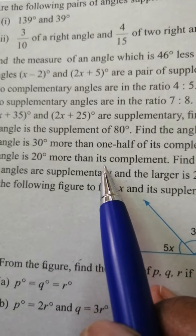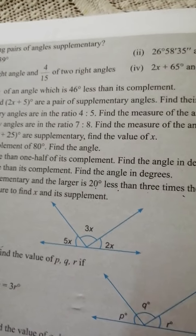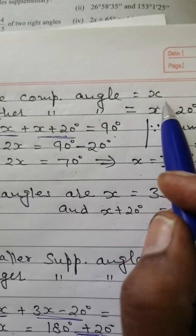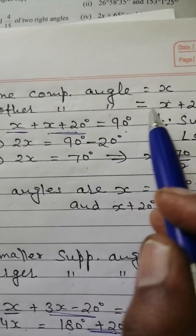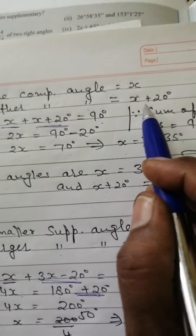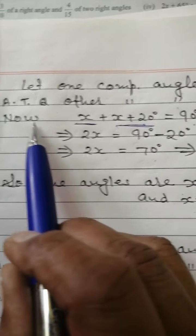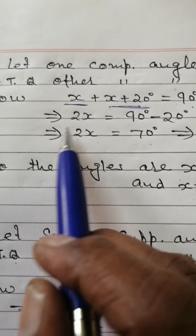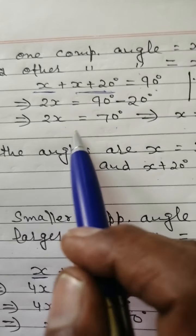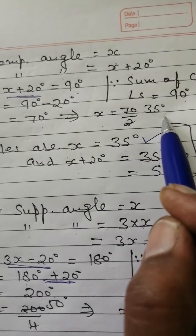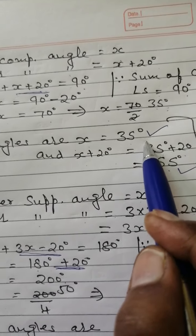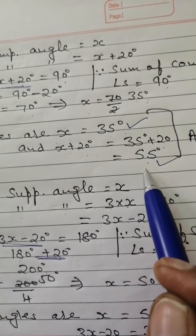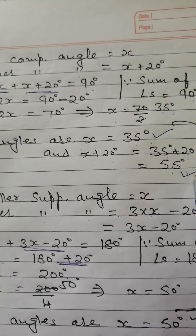Question number 17: An angle is 20 degrees more than its complement. Find the angle in degrees. Let one complementary angle equal x. According to the question, the other complementary angle equals x plus 20 degrees. Adding: x plus x plus 20 equals 90 degrees, because the sum of complementary angles is 90 degrees. 2x equals 70 degrees, so x equals 35 degrees. The angles are 35 degrees and 35 plus 20 equals 55 degrees. These two are complementary angles. Answer.